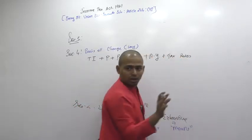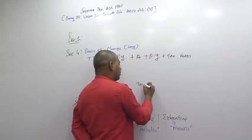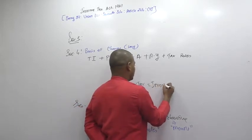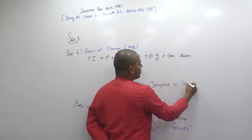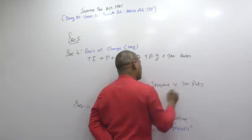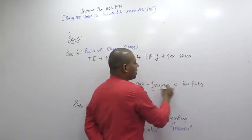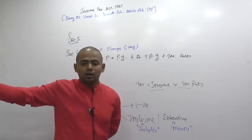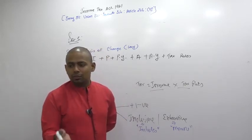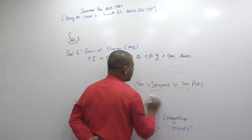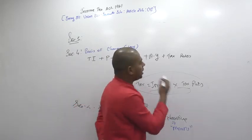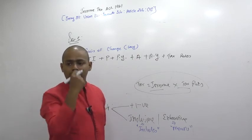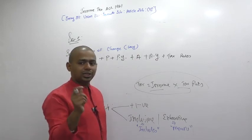Tax is a function of two things: income multiplied by tax rates. If I say 30%, you apply that on income — then only you get the tax amount. So tax depends on income and tax rate. This act will teach you how to compute income. For tax rates — GST rates are given in GST law.